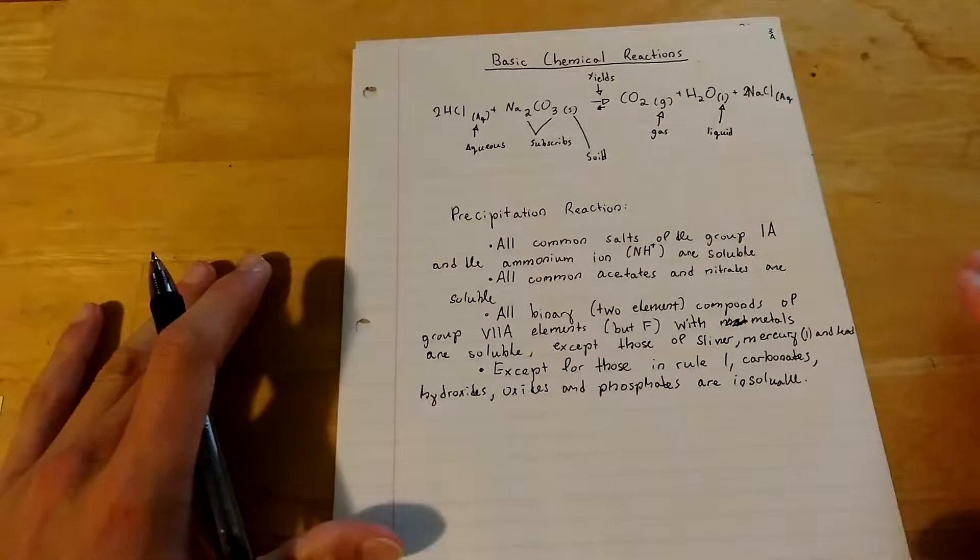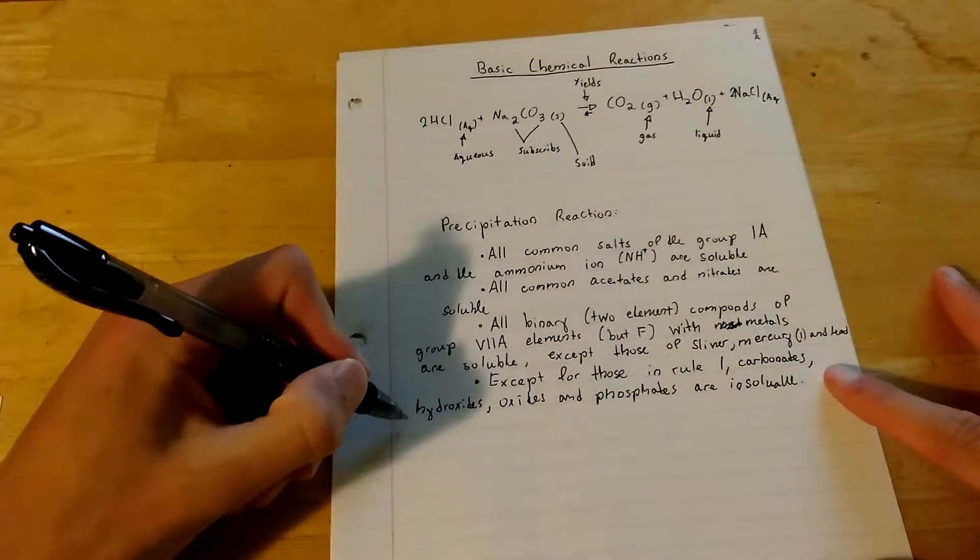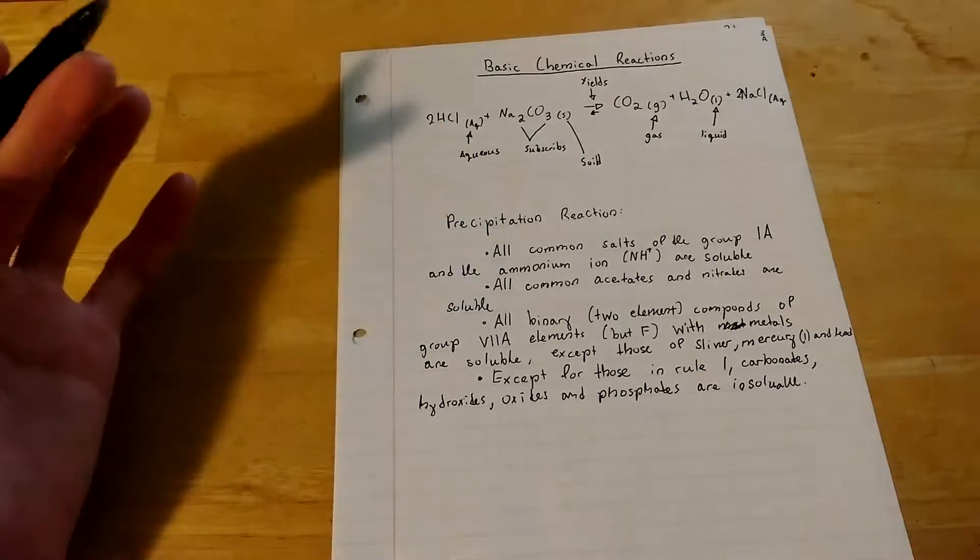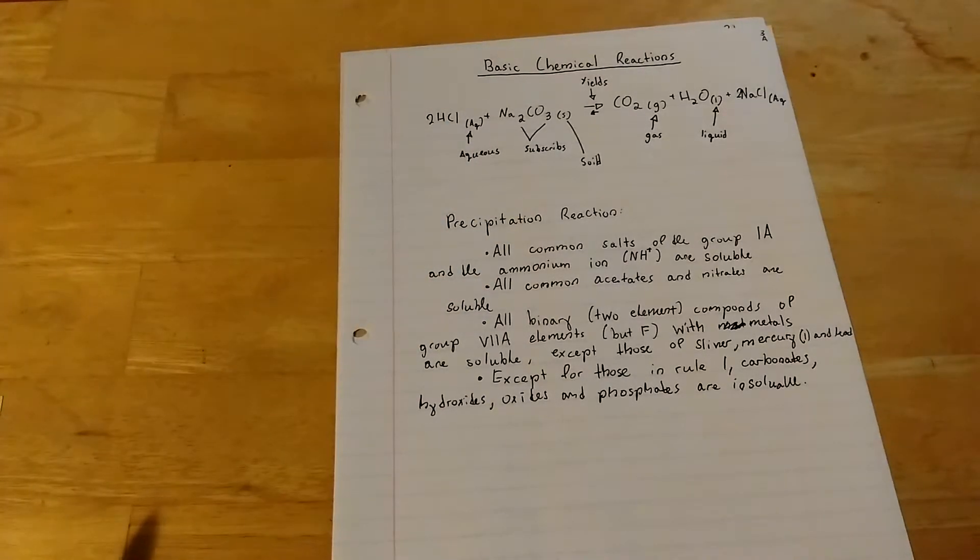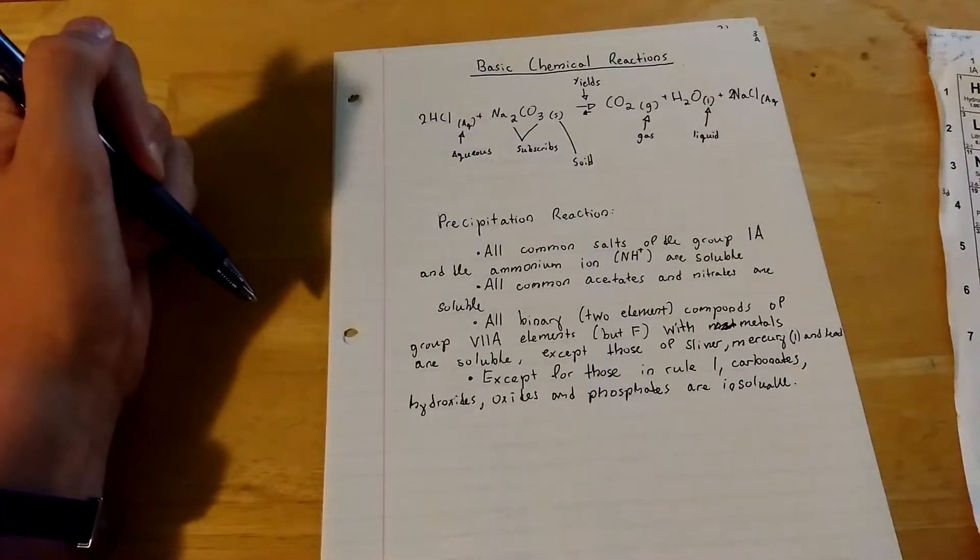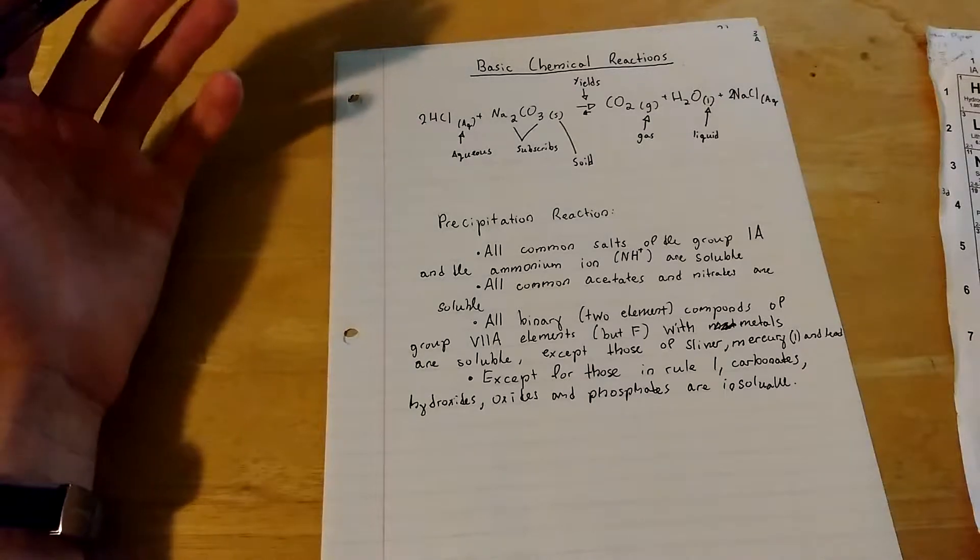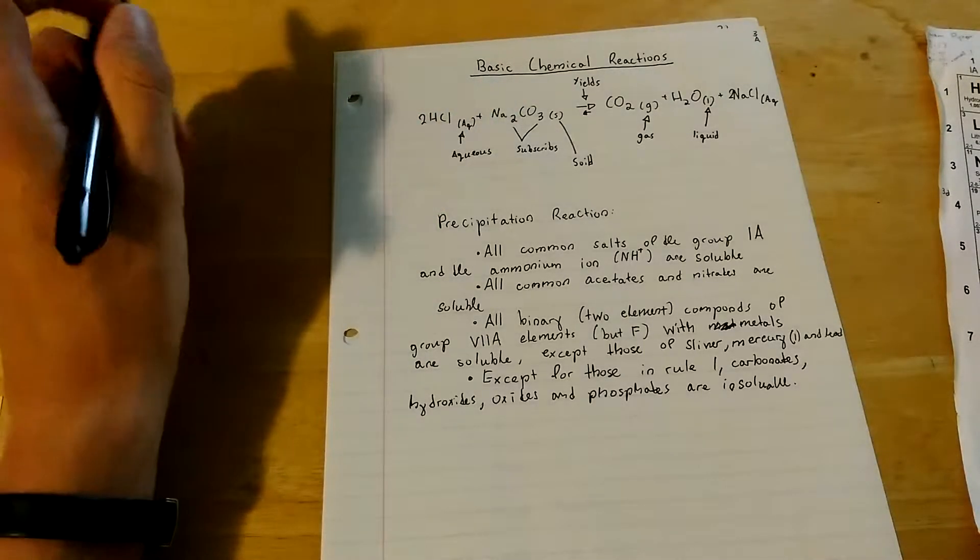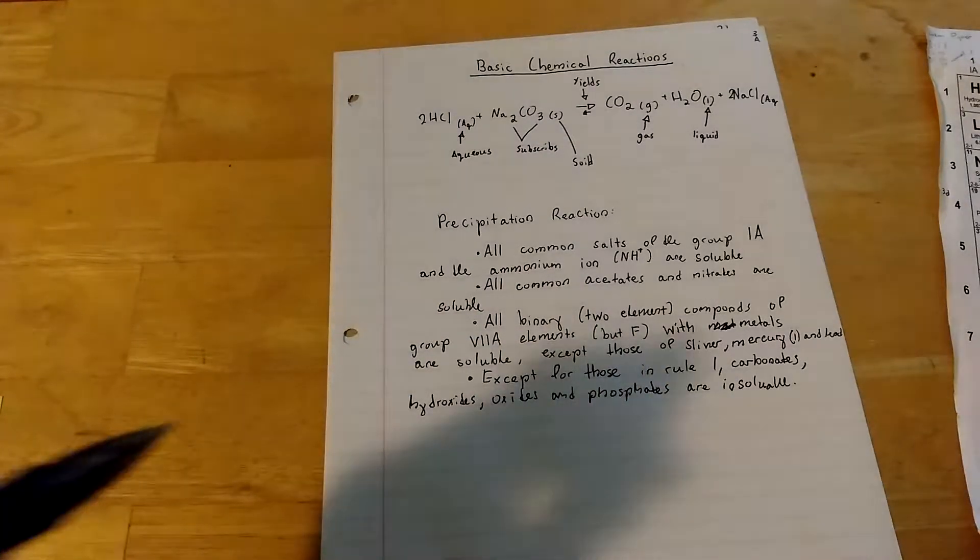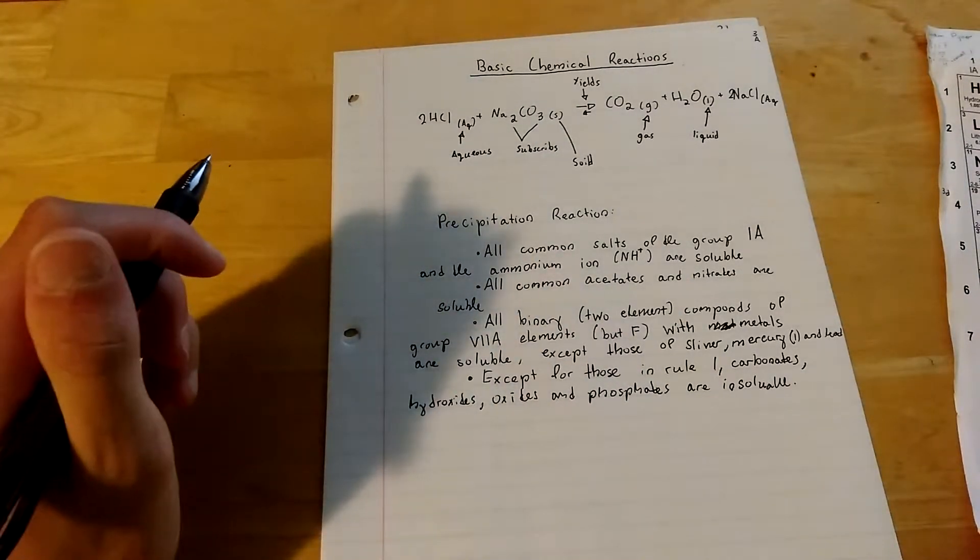For precipitation reactions, these are like the solubility rules, actually. All common salts of the group 1A and the ammonium ion NH4 are soluble.